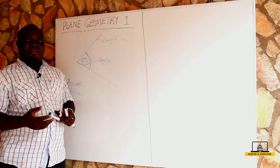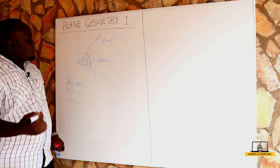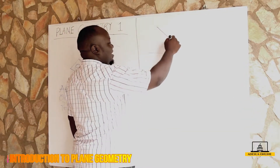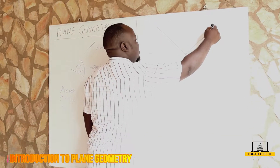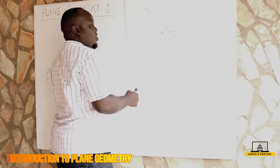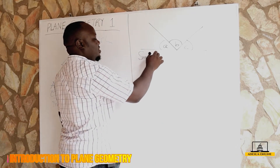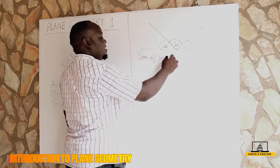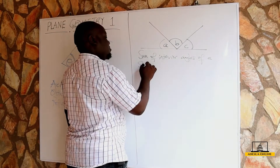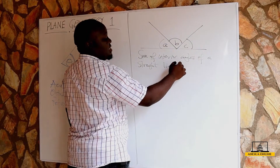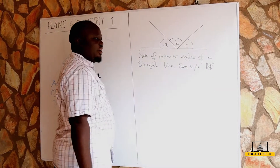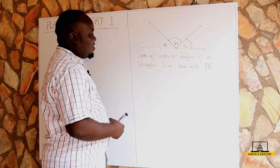Let's start with a normal straight line. If I have a straight line with angles in between, and I name this angle A, this angle B, and this angle C, we can say that the sum of angles on a straight line sums up to 180 degrees. I know all my students know that, because angles on a straight line sum up to 180 degrees.